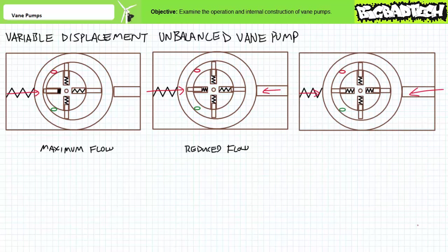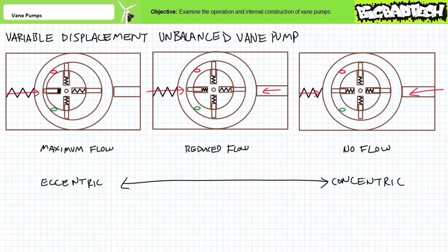Finally, if the piston exerts equal force as the spring, the cam ring shifts and realigns the rotor to a perfectly centered position. The inlet port does not see a region of increasing volume, nor does the outlet port see a region of decreasing volume. The centered rotor therefore serves to essentially de-stroke the variable displacement unbalanced vane pump to provide no flow. The terms eccentricity and concentricity are sometimes used to describe variable displacement unbalanced vane pumps in various states. When the rotor is fully offset, maximum flow is achieved and the alignment is eccentric, meaning differently centered. When the rotor is fully centered, minimum flow is achieved and the alignment is concentric, meaning a shared center.